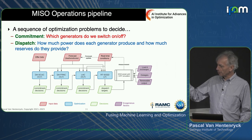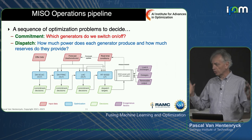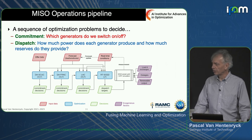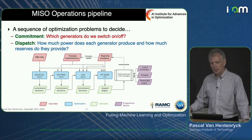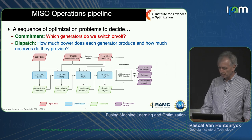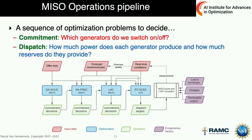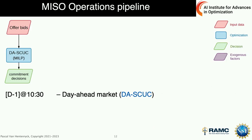I'll talk about these challenges in the context of MISO — the Mid-Continent Independent System Operator in the U.S., which operates the grid from Canada to New Orleans, Louisiana. They have about 40 million customers and about 70,000 miles of transmission lines. They were at 17% renewable energy about six years ago and are trying to reach about 32–33% this decade. There are two kinds of decisions: discrete ones (which generators to commit) and continuous ones (matching load at every point in time).